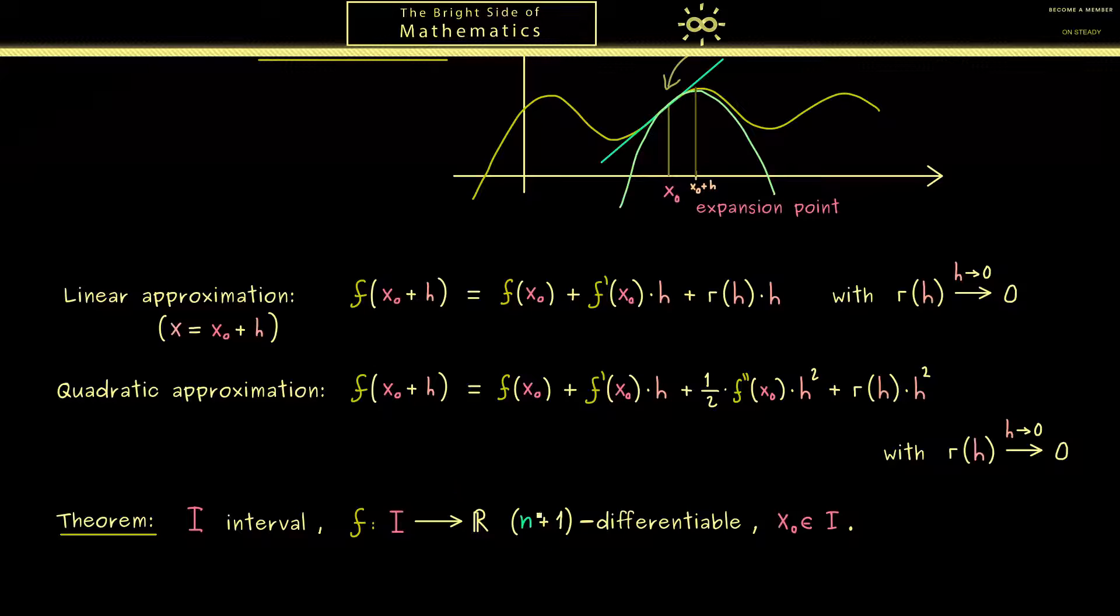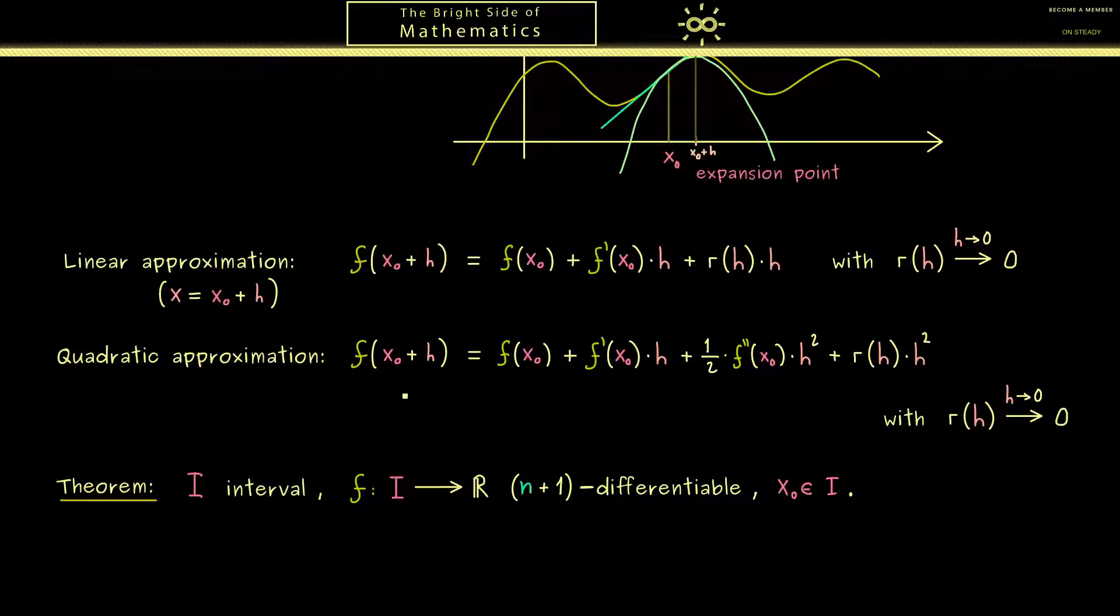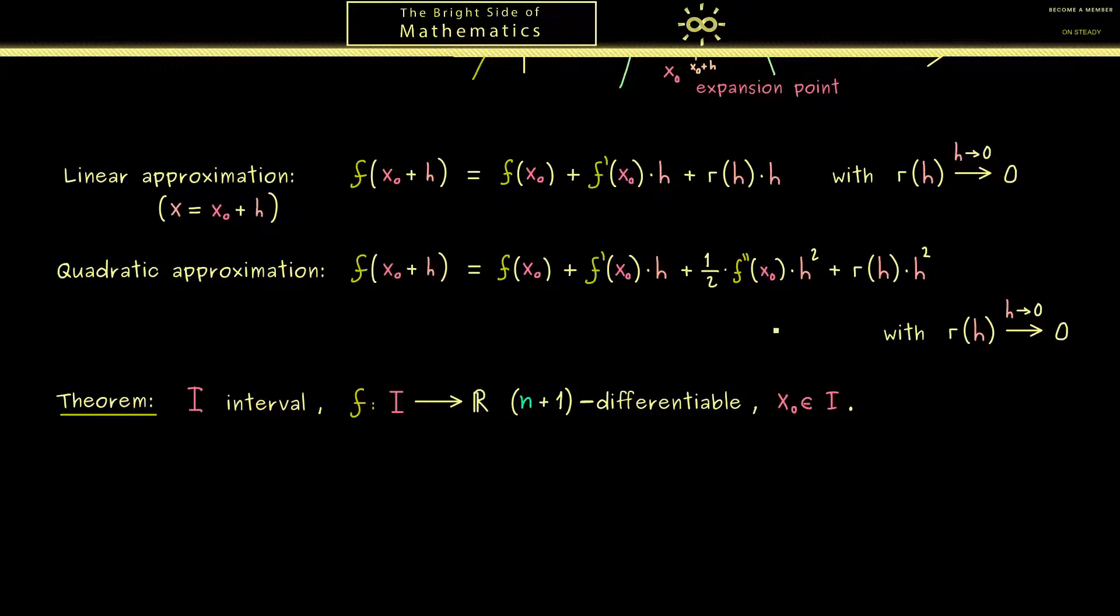Now the claim here is that for any number h we have such an approximation formula. Namely this means that we take any h from the real number line such that x0 plus h still lies in I. This is important because only then we can put this number into the function f.